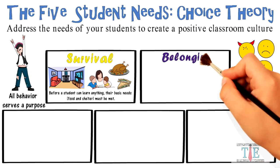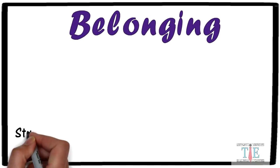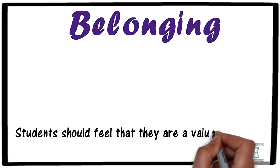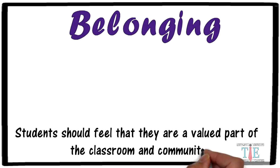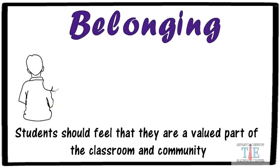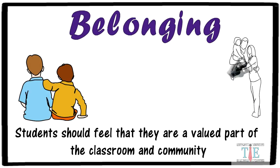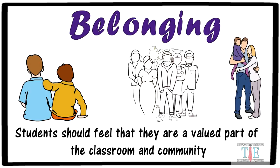The next basic need to explore is belonging, described as having affiliations with other students. Students should feel that they are a valued part of the classroom and community. Every student wants to be a part of the group — even the most rebellious students, deep down, want to be accepted by their peers. As a teacher, create opportunities through collaborative learning for students to form bonds with one another.